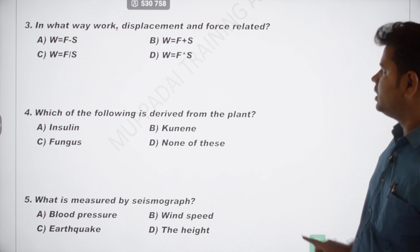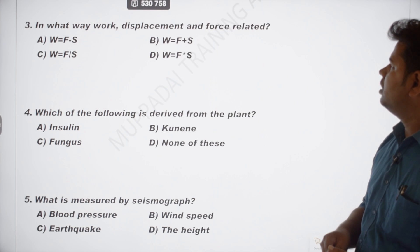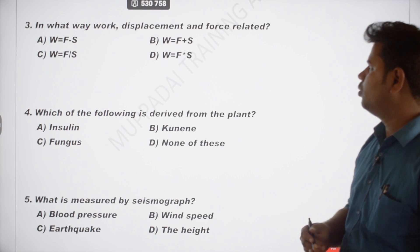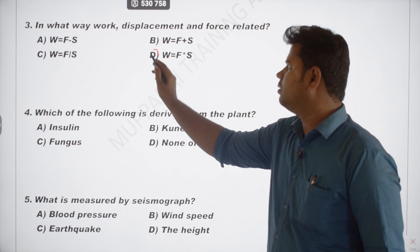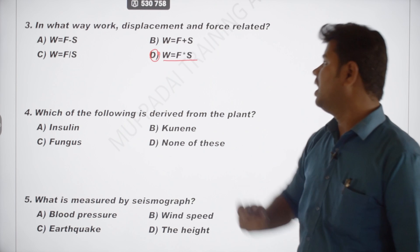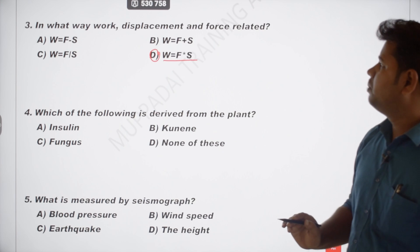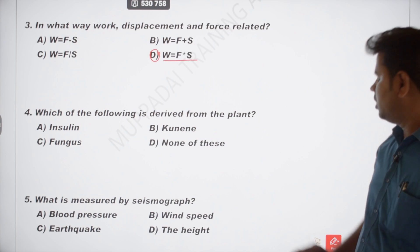The next question is a direct fact: in what ways are work, displacement, and force related? Work is equal to force multiplied by displacement. That is the third answer.